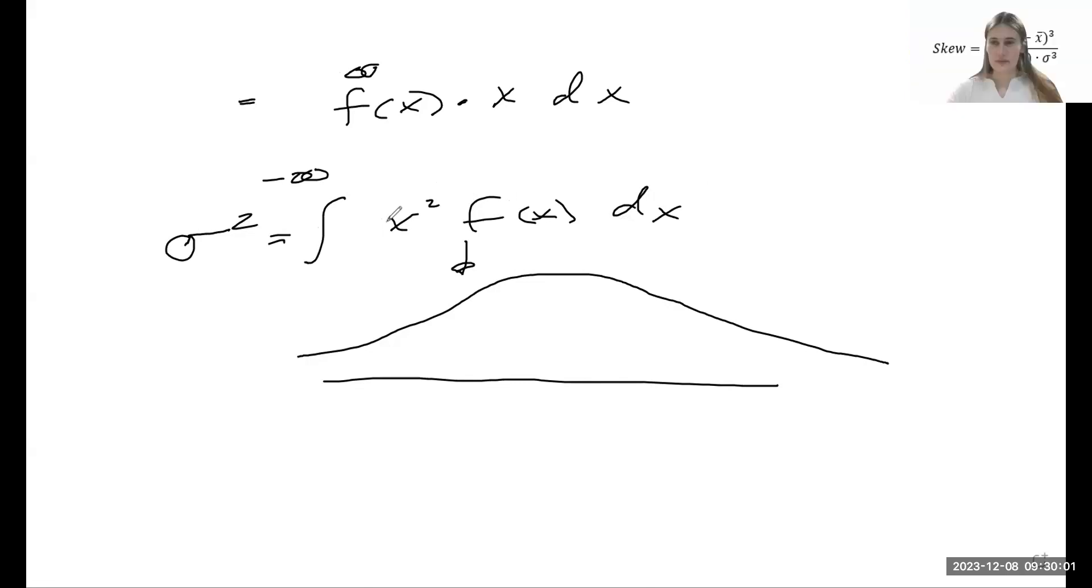So is the skewness and the kurtosis basically taking these bits to higher powers? That's what it looks like. Skewness is looking like right behind you there. Yeah, I've got the formula here. We've got the cube going on. Can you pull up something for kurtosis?